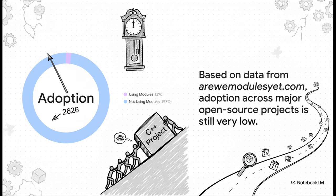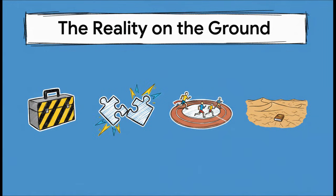There's actually a website called arewemodulesyet.com, and it tracks adoption across all the major open source projects. And the answer right now is a pretty resounding no. It got so bad that one C++ expert joked at a conference that at the current rate of adoption, we'll probably finish porting all the major libraries by the year 2626. And the hurdles here are very real and very technical. For starters, support in major tools like CMake is still officially flagged as experimental. Those BMI files I mentioned, they are incredibly finicky. If you compile a module with one set of compiler flags and then try to use it in a file with slightly different flags, your build just fails.